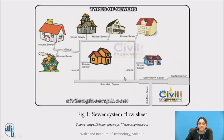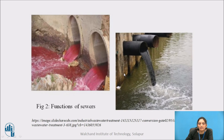This is a sewer system which is collecting sewage from individual houses. At last, the sewage of the entire city is collected in a main sewer. In earlier days, it was directly disposed into a natural source of water, such as a river or sea. This causes water pollution or river pollution and also affects aquatic life. So before disposal, it must be treated.